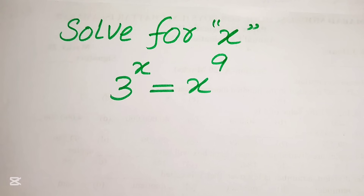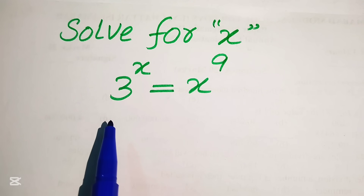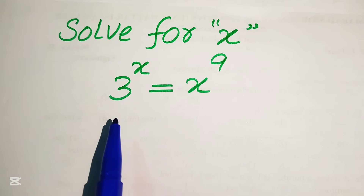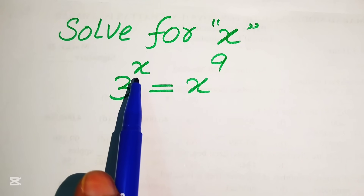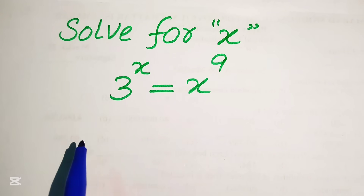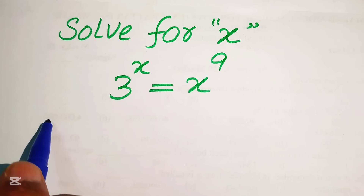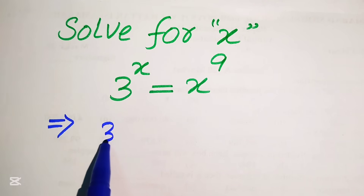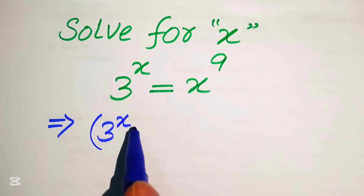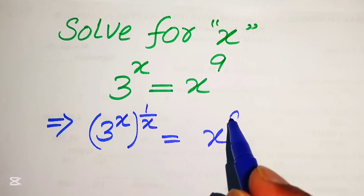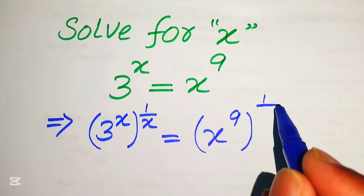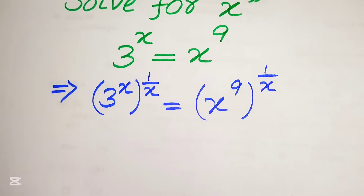First we need to focus on the variable terms. Here the variable term is x, so we move the variable terms to the right hand side and all the constant terms to the left hand side. To eliminate x from the left hand side, we take the xth root on both sides. So we write 3 to the power of x, whole power 1 over x, equals x to the power of 9, whole power 1 over x.